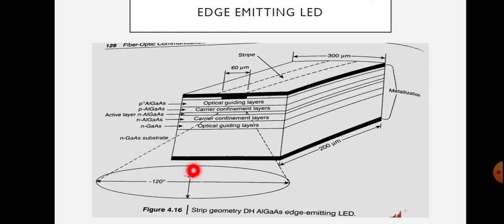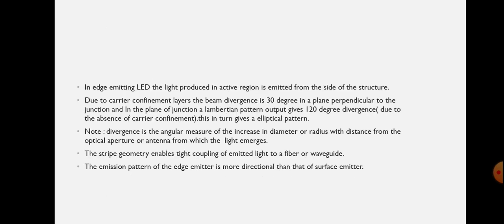In the horizontal plane, the divergence is 120 degrees. In the perpendicular direction, the divergence is 30 degrees. This gives an elliptical structure. This is the edge emitting LED, and the emission pattern of the edge emitter is more directional than the surface emitter.